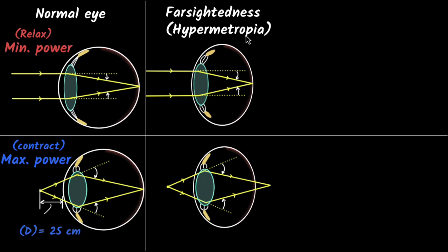Farsightedness is also called hypermetrophia. The cause is that your eyeball could be shrunk, or more generally, your eyes do not have enough power — the lens doesn't have enough converging power to see things that are close by. To correct it, you need to help your eyes get more converging power by adding a converging lens in front. The converging lens provides more converging power to your eyes, and that's how you correct farsightedness.